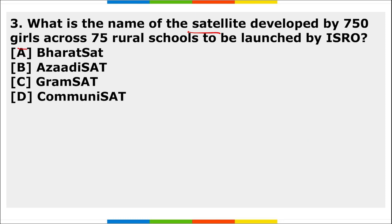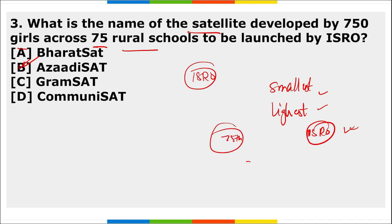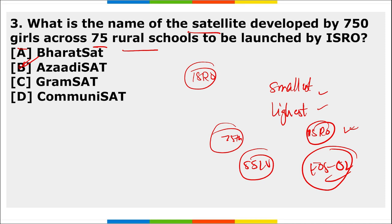What is the name of the satellite developed by 750 girls across 75 rural schools to be launched by ISRO? The name of the satellite is AzaadiSAT. ISRO is set to launch it on a Small Satellite Launch Vehicle (SSLV) from Satish Dhawan Space Centre in Sriharikota. This is the smallest and lightest commercial rocket built by ISRO.